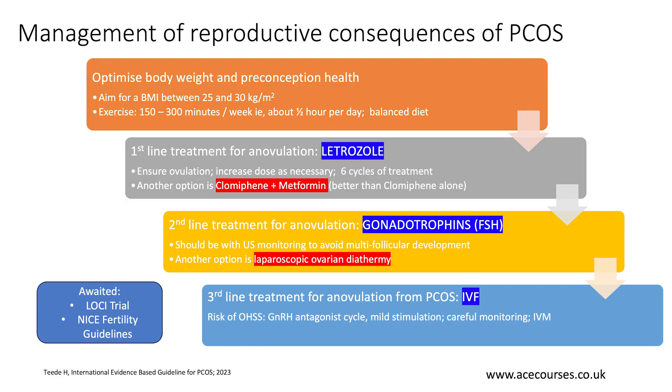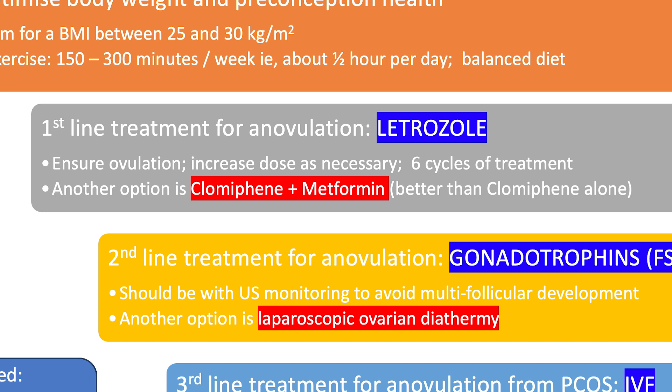Now let's move on to medical treatment, which is organized as first line, second line and third line treatments. The recommendation is to use letrozole as the first line treatment. When using it, make sure the woman is ovulating using ovulation tests, and if she isn't then you can increase the dose appropriately. Generally patients will get up to six cycles of treatment with letrozole.